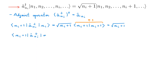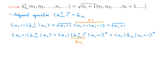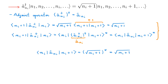Now let's write the matrix element again using the conjugation property of the scalar product, and then use the fact that the adjoint of an adjoint gives the original operator. These two expressions for the matrix element imply that the inner product equals the square root of ni+1, which is real since occupation numbers are zero or positive integers. Since Fock states form an orthonormal basis, aUI acting on |ni+1⟩ must give a term proportional to |ni⟩, with proportionality constant square root of ni+1.